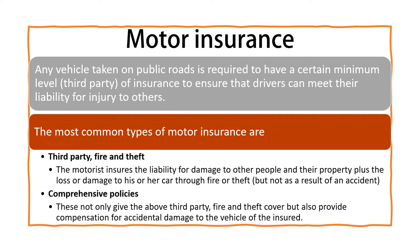Comprehensive policy insurance provides the above third-party fire and theft cover, but also covers accidental damage to the vehicle of the insured. For example, if two vehicles are in an accident and you have a comprehensive policy, your insurance will cover your vehicle, and if the mistake is on your side, it will also cover the other person's vehicle.